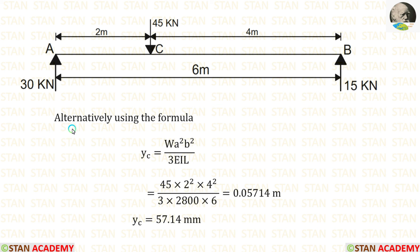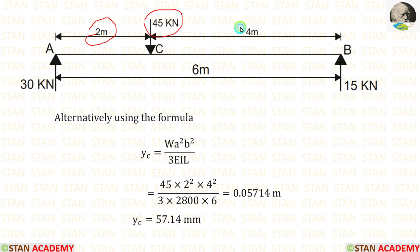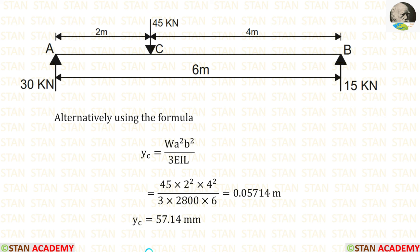Alternatively, we can verify using the deflection formula derived previously: for a non-central point load, deflection = WA²B²/(3EIL). With W = 45 kN, A = 2 m, B = 4 m, L = 6 m, and EI = 2800 kNm², we get the same result: 0.05714 m, or 57.14 mm. This concludes the session. Thank you for watching.